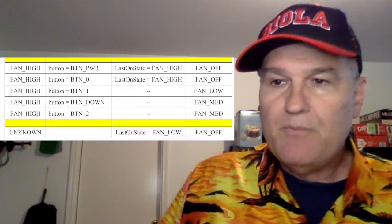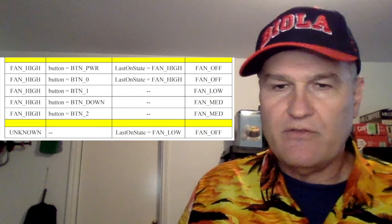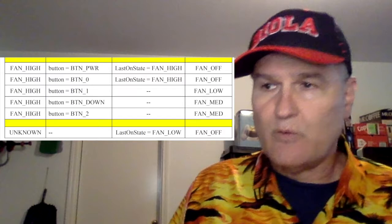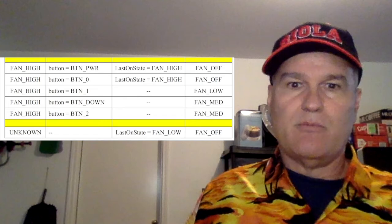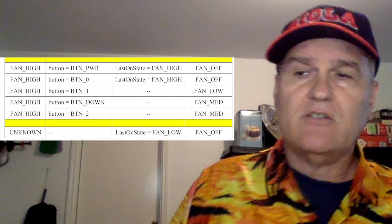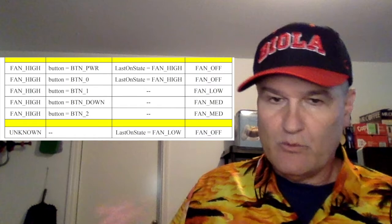Now, you'll notice also on the last one here, I've got the unknown state. And the idea here is that for some reason, the wheels are falling off. Somehow you get in a crazy state. This just recovers to fan off. And it also, very importantly here, it sets the last on state to low, because we don't want to come out of power and use that and go to some crazy state. And since we don't really know where we were, we're just going to play it safe and set it to low. And notice this is the power on condition, where maybe we don't know where we're at, so we just come up to unknown.